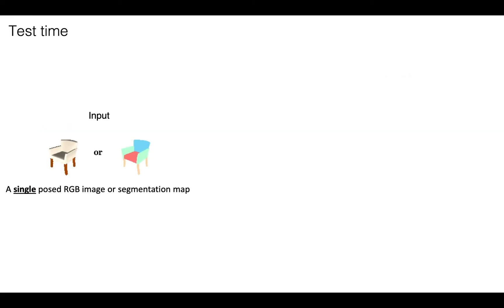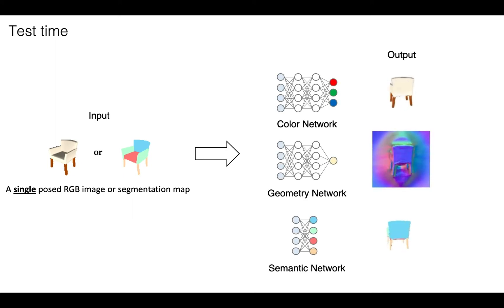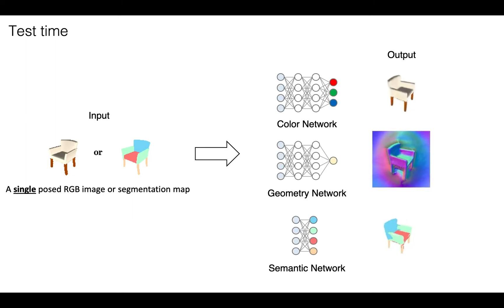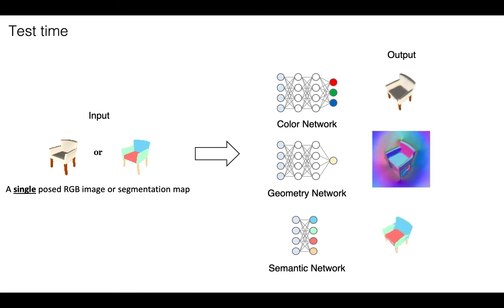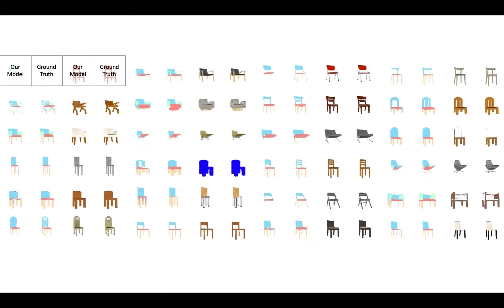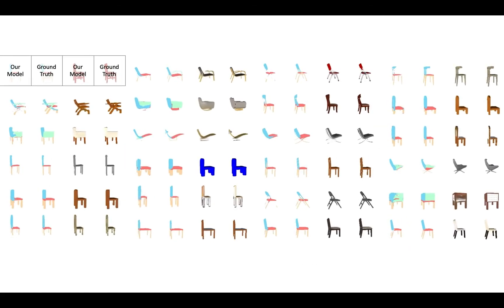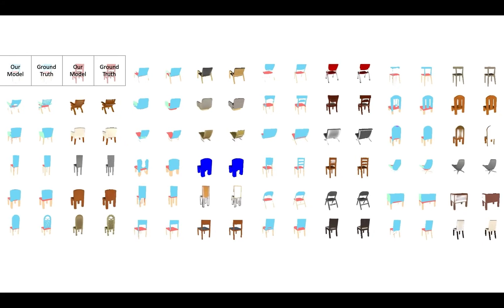At test time, given either a single RGB image or segmentation map of an unseen chair, we infer a new SRN and map its features to depth values, RGB values, and semantic labels. Here are a subset of our results over the whole test set.